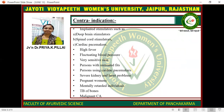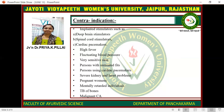Contraindications include implanted stimulators such as deep brain stimulators, spinal cord stimulators, and cardiac pacemakers, high fever, fluctuating BP, peri-sensitive skin, persons with untreated fits, persons using cardiac pacemakers, severe kidney and heart problems, pregnant women, mentally retarded individuals, TB of bones, and malignant pathology.